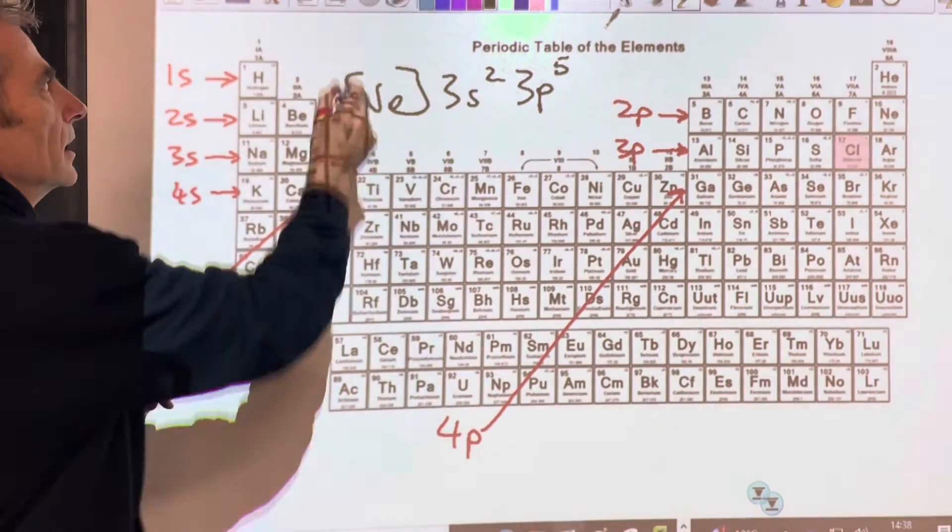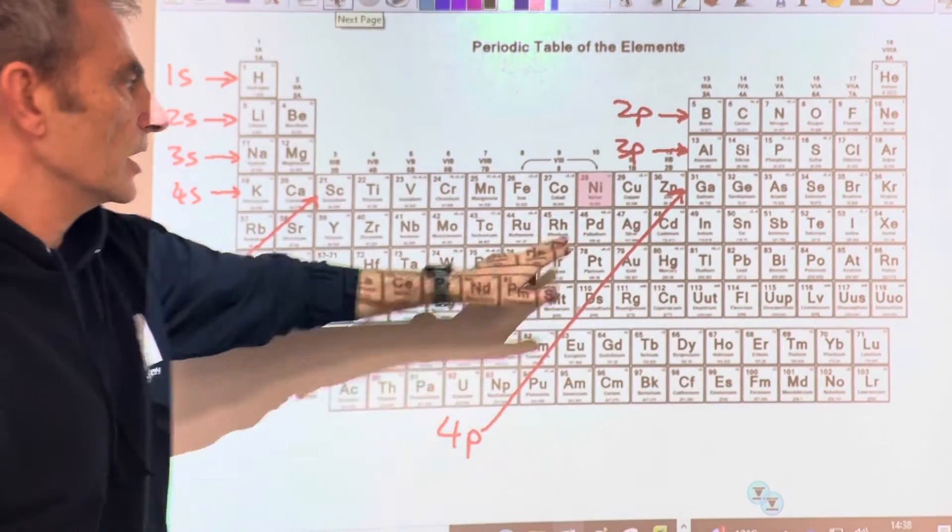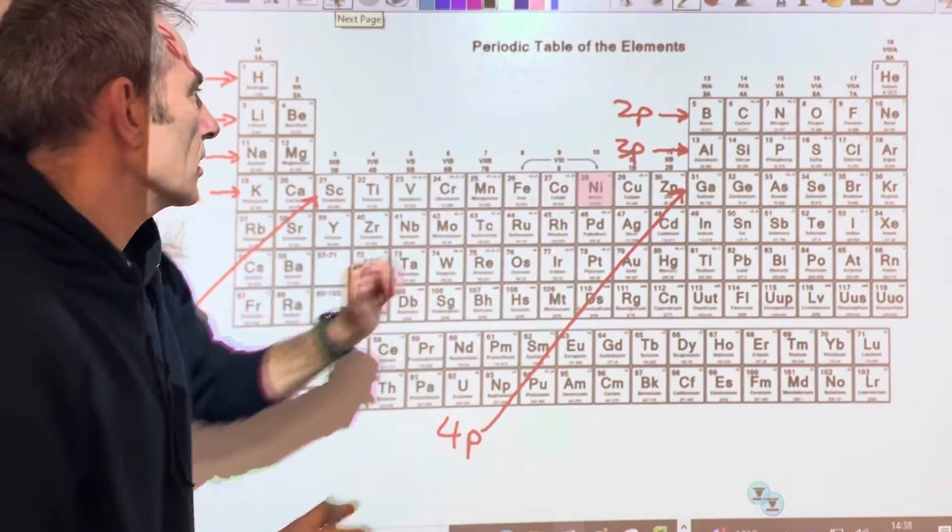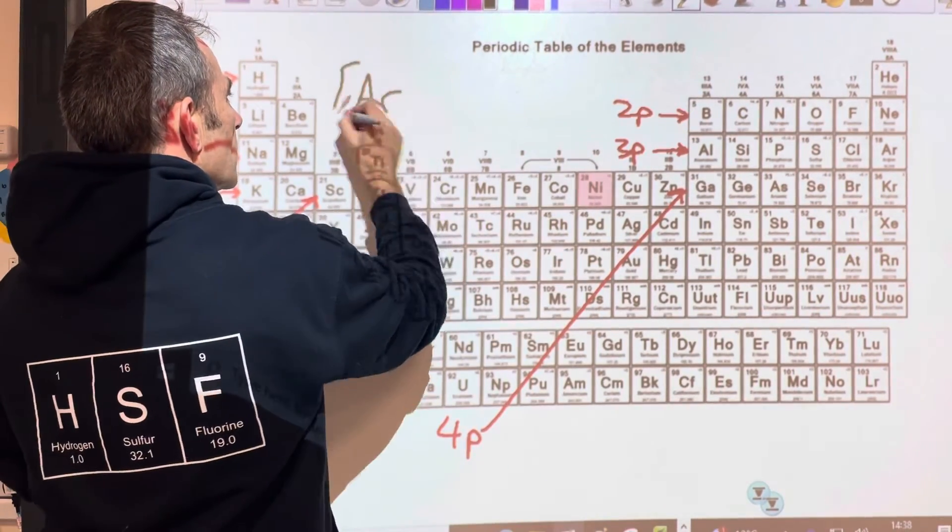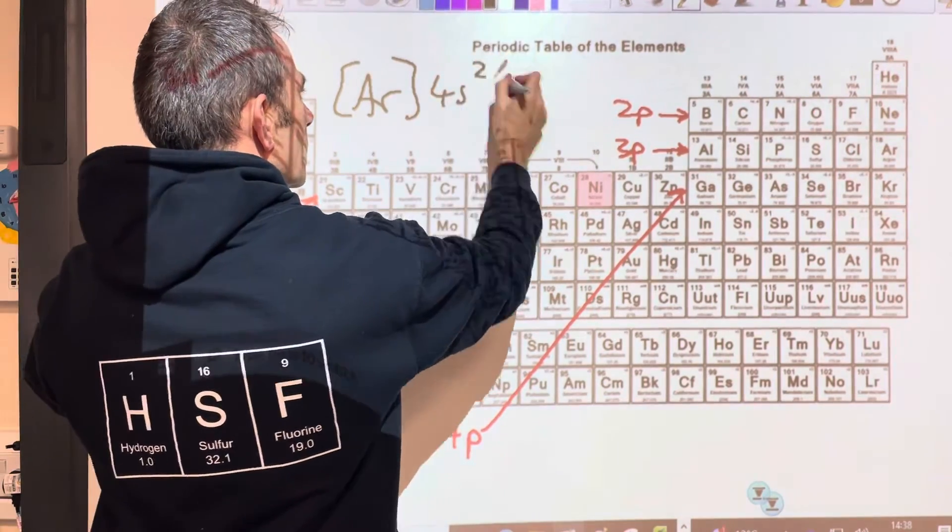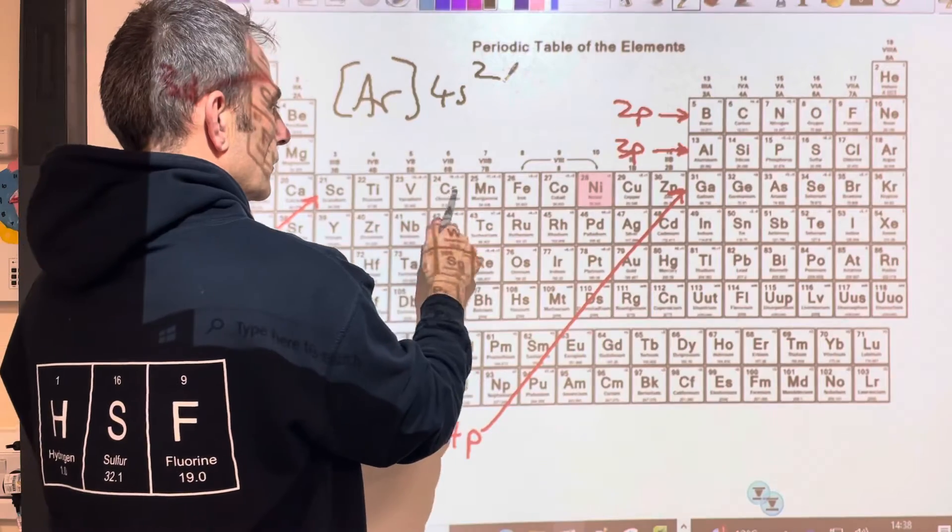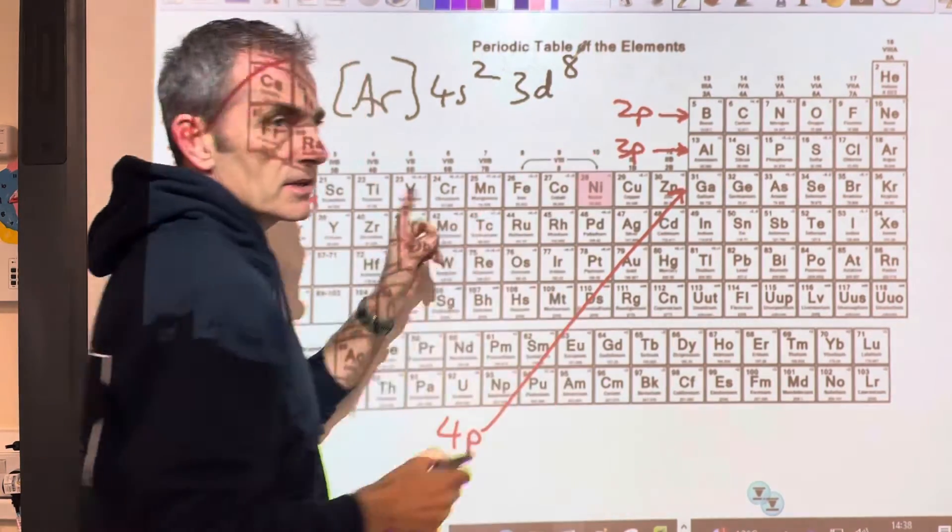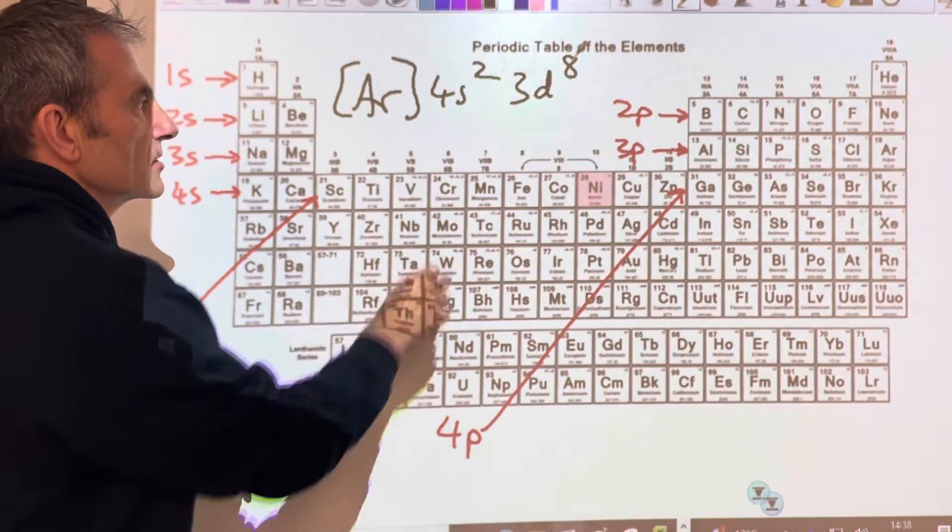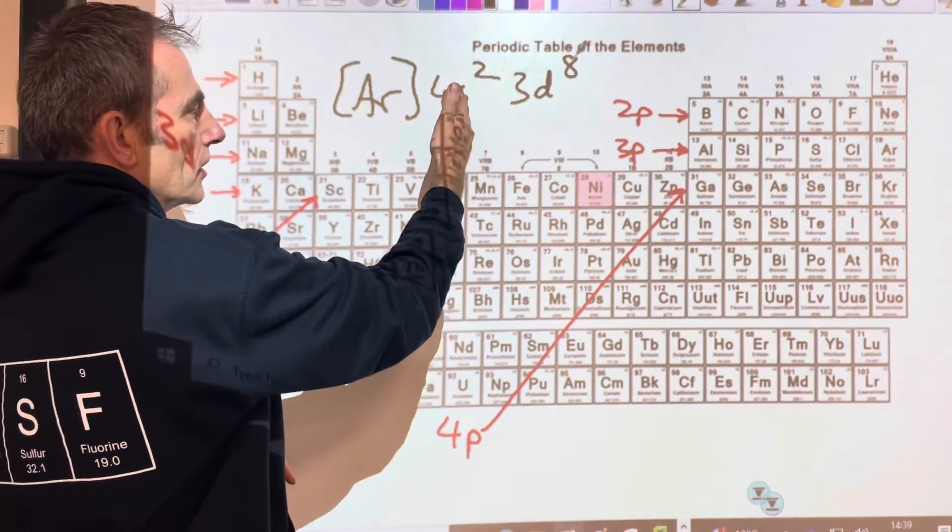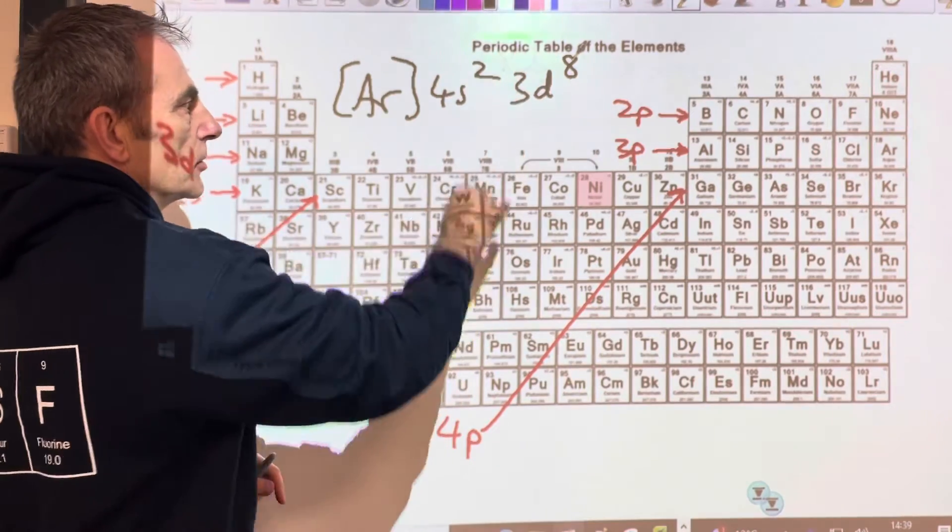And another one - so we've got nickel. So we've got one of the transition elements now, so it's going to be argon square brackets, and then what have we got? We've got 4s² 3d one, two, three, four, five, six, seven, eight - 3d⁸. And what I forgot to say when I did the first one was the 4s and 3d can be written either way around. So I've gone for the order of filling, but you can write them the other way around if you want. The exam boards are quite happy with either way.